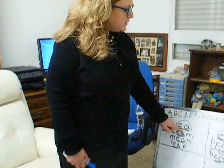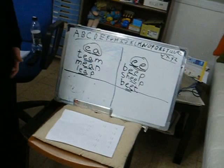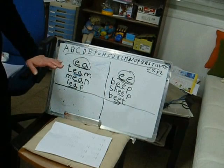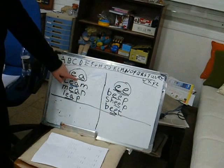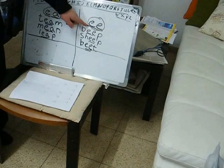Today we're learning two new vowel teams — E-A and E-E. They both actually make the same sound. Let's see if we can figure out what sound these vowel teams make. I'm going to give you a hint. Remember that rule we learned? When two vowels go walking, the first one does the talking. So what's the first vowel in E-A? E. So what sound do you think E-A makes? E. Great. And over here we have E-E. What's the first vowel? E. So what sound does E-E make? E. Very good.